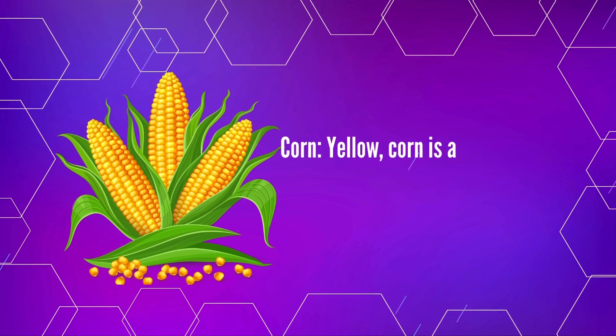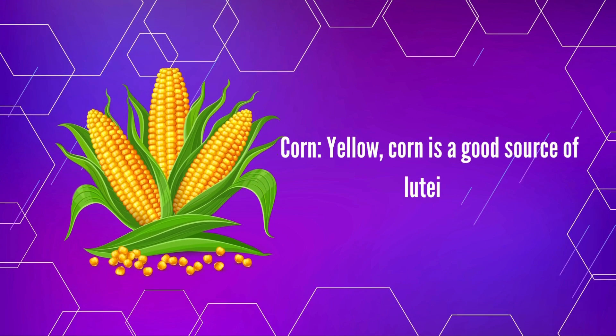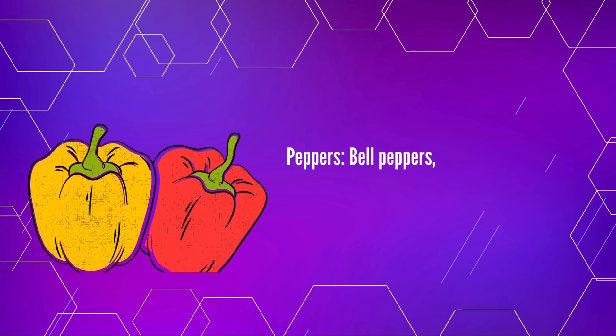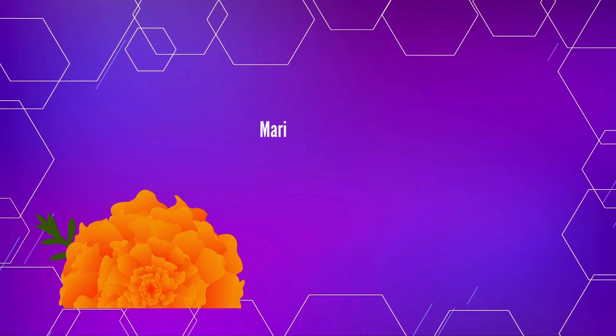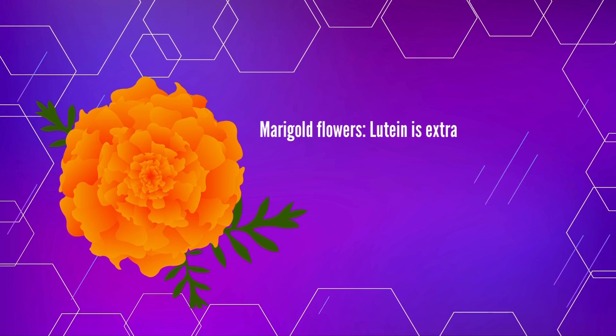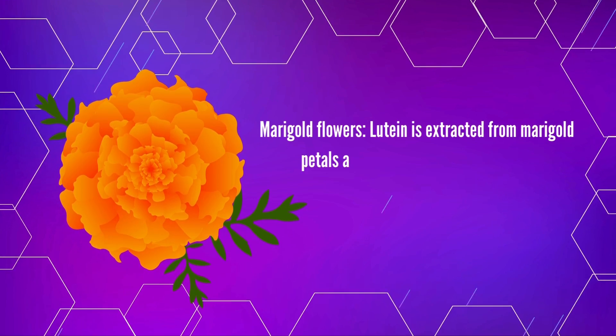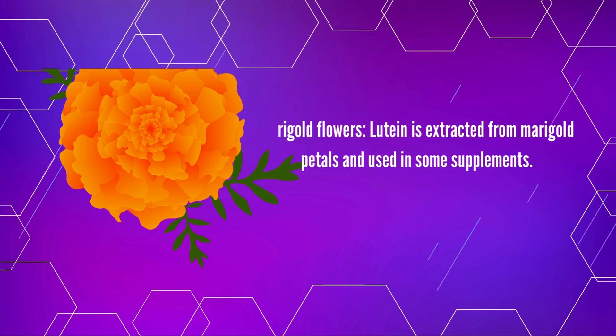Corn, yellow corn is a good source of lutein. Peppers, bell peppers, especially yellow and orange ones contain lutein. Marigold flowers: lutein is extracted from marigold petals and used in some supplements.